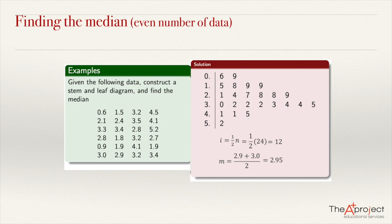This is what you need to do to compute the median. It's something easy — just arrange the data from the lowest to the highest and find the one in the middle. If you have an even number of data, get the average of the two data in the middle.